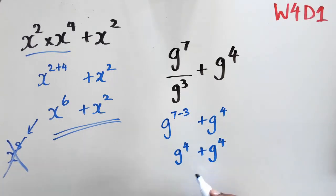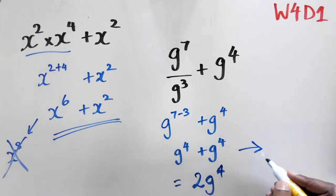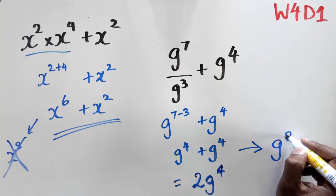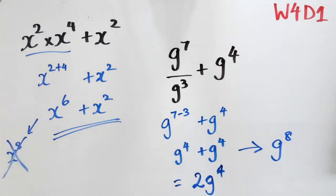Now when we combine these two terms, remember that this actually equals two lots of g to the power of 4. And as usual, you will see some people making this mistake of writing this as g to the power of 8, and that is actually incorrect.